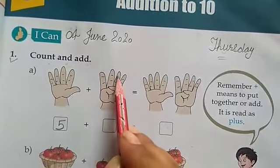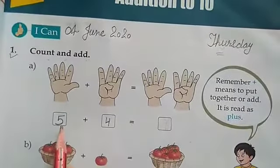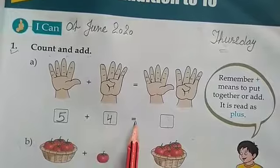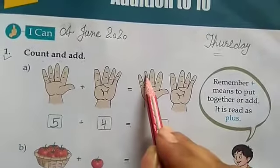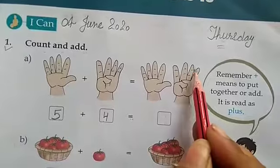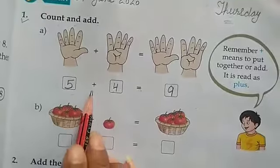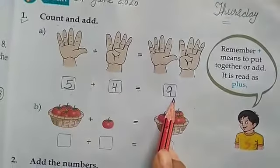Count the next hand: 1, 2, 3, 4. How many fingers? 4. Now 5 plus 4 equals... 1, 2, 3, 4, 5, 6, 7, 8, 9. Total fingers is 9. 5 plus 4 equals 9.